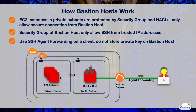You can remotely access the bastion host using SSH. From the bastion host, you can then SSH to the EC2 instances in the private subnet. As a security best practice, AWS recommends using SSH agent forwarding on the client, which allows you to connect from the bastion to other instances without storing the private key on the bastion.